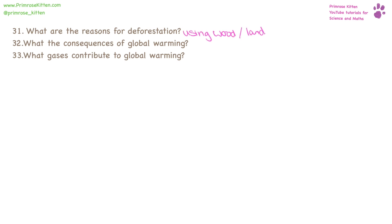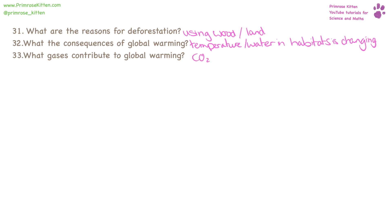The consequences of global warming or climate change is that places are changing temperature. The amount of rain that is falling is changing and the amount of snow is changing. There are lots of gases that contribute to global warming — carbon dioxide, water, and methane being the main ones.